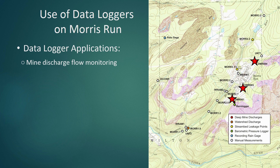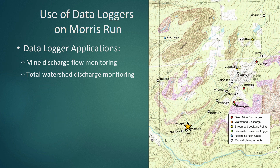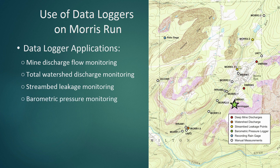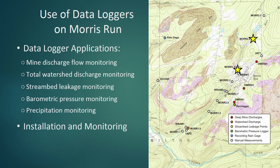For each of the mine discharges, a pressure-transducing data logger in each flume measures flow. Downstream from the discharges, another logger with a staged discharge curve measures total watershed flow in Morris Run. To measure leakage from the stream into the mines, loggers and flumes are installed upstream and downstream of the leaking reach. Because the loggers used for flow measurement are the non-vented type, another logger is stationed in free air to collect barometric pressure correction readings. A final data logger installation uses a tipping bucket rain gauge to collect precipitation data for the watershed. The following footage shows the installation of the leakage monitoring stations on Morris Run and a monitoring sample run conducted shortly thereafter.